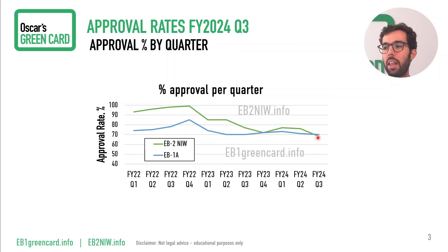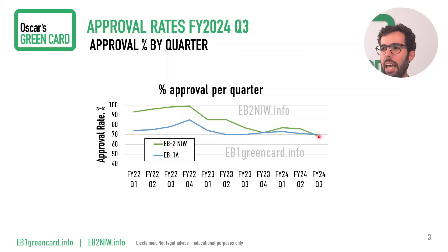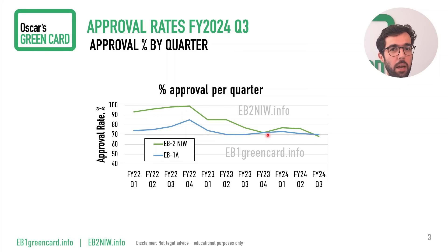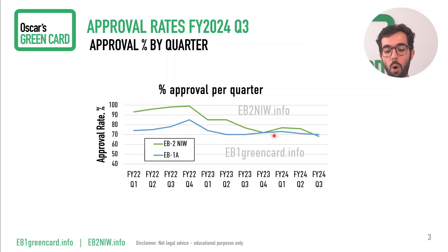For the first time pretty much ever, the numbers for EB2NIW are lower — meaning denial rates are higher for EB2NIW. We are now seeing an approval rate of slightly below 70 percent, around 68 percent for EB2NIW and around 70 percent for EB1A. Just to give you a sense, the average approval rate for EB2NIW over this period would be higher than 80 percent, and for EB1A about 74–75 percent. So for both categories we are lower than the average, but that is particularly true for EB2NIW where we're seeing really, really low approval rates.